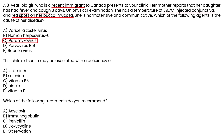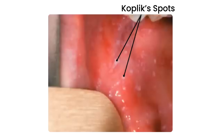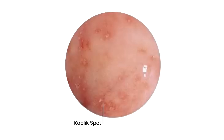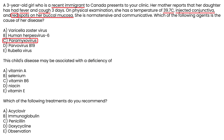The only thing that was a little strange was the fact that they called the spots red, but if you look at those Koplik spots, you do see that sometimes they are surrounded by a little bit of a red border — so perhaps that's what they're referring to. Regarding the deficiency question, patients who have vitamin A deficiency are associated with a severe case of measles, so the answer is vitamin A.